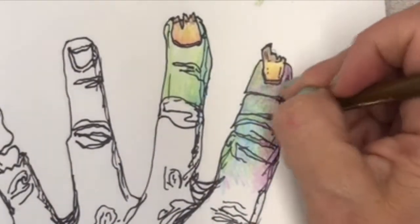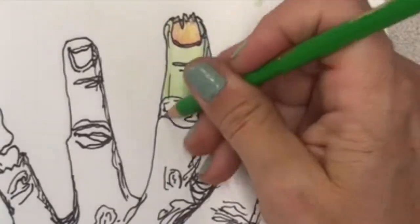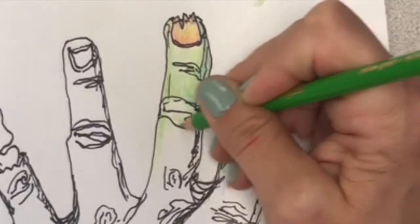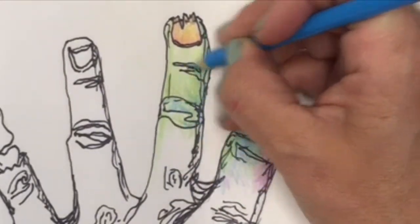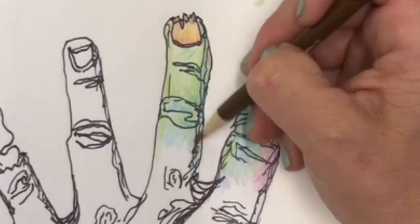All that bruising comes from layers and layers of colors. So take your time, start light, add layers, even colors that you don't think will make sense. If you add them lightly in layers, they're going to look awesome.